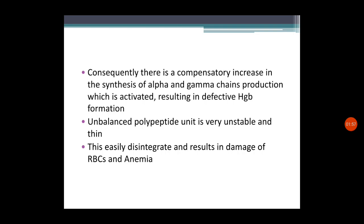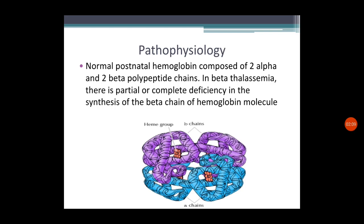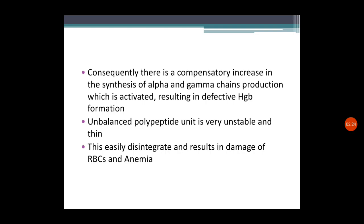Consequently, there is a compensatory increase in the synthesis of alpha and gamma chains, which is activated, resulting in defective hemoglobin formation. Instead of the beta chain, increased production of alpha chain is initiated, or some amount of gamma chain is produced. This makes the structure unbalanced — an unbalanced polypeptide unit is very unstable and becomes thin.